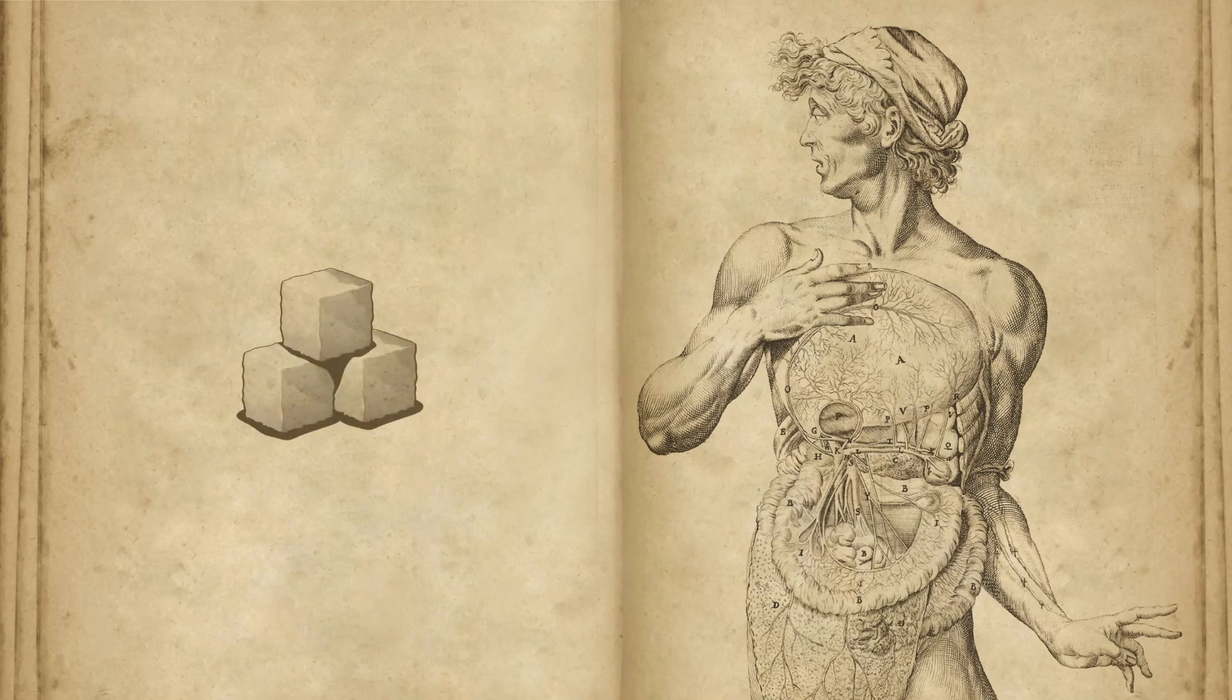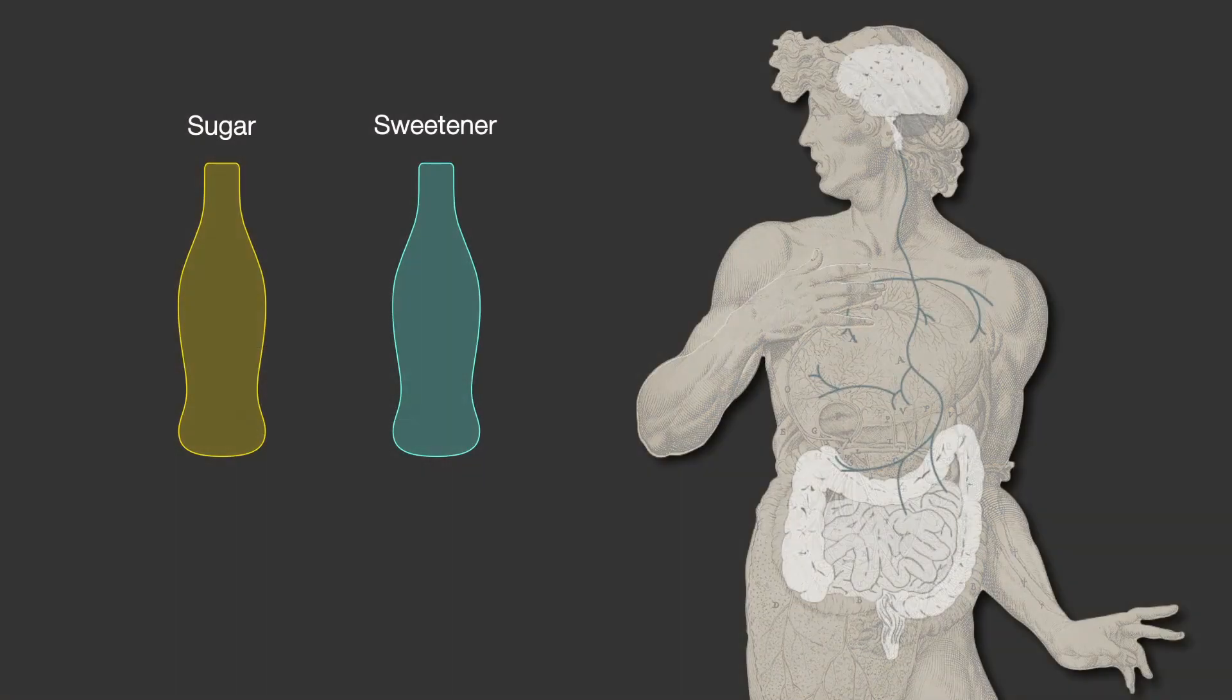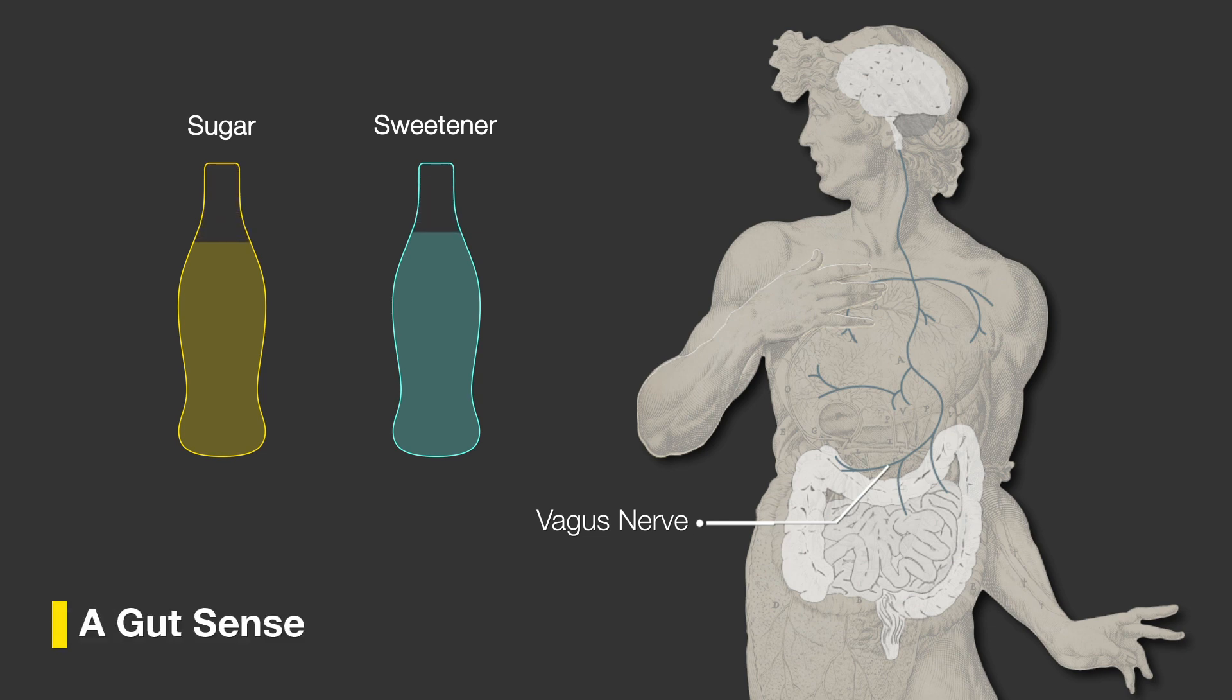Have you ever wondered where our sugar cravings come from? Scientists have long known that our preference for sugar does not depend on its sweet taste alone. Instead, our preference for sugar depends on a sensation arising from the gut. But how the gut guides our preference for sugar over artificial sweeteners was obscure until now.